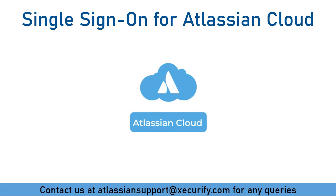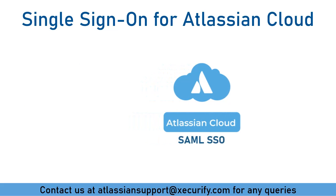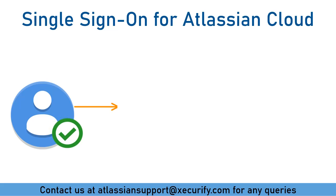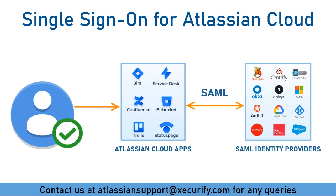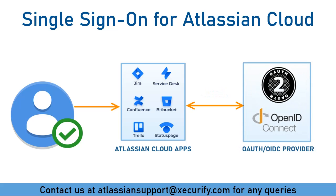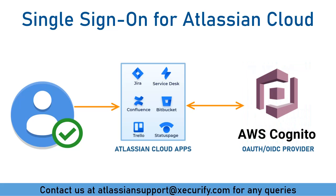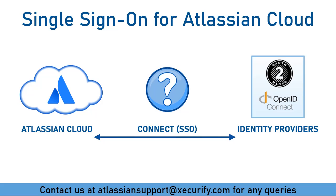Atlassian Cloud supports SAML, which allows users to authenticate to Atlassian Cloud products through an existing SAML identity provider. But what if users are present in an OAuth or OpenID provider, like AWS Cognito? Will SSO still work? Can we connect Atlassian Cloud's SAML SSO modules to OAuth/OIDC providers? Is it even possible?